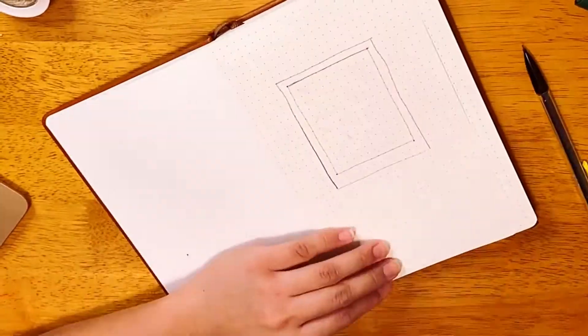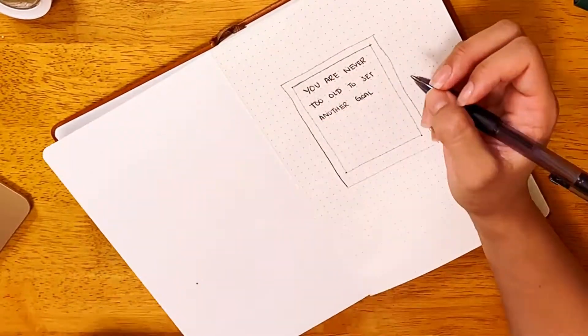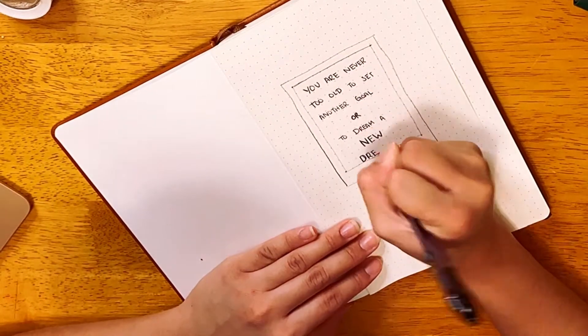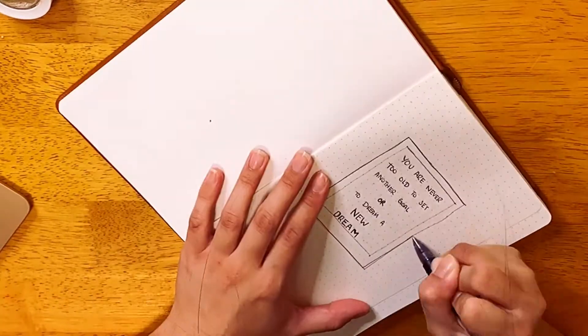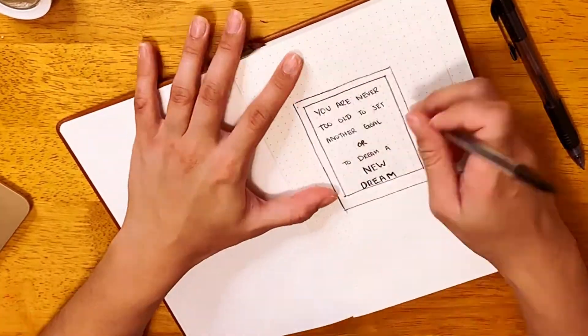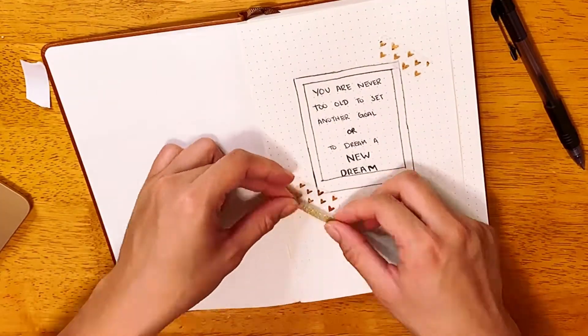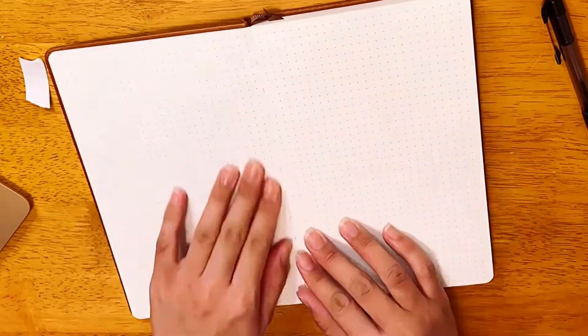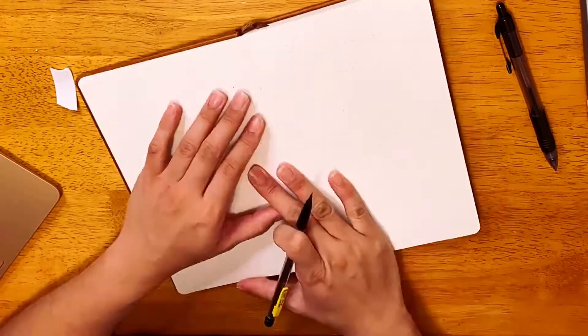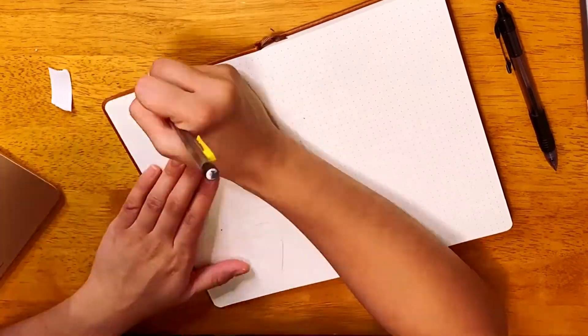As you can see, I am tracing everything with a pencil first because I just don't want to use a pen straight off the bat. I know I will make mistakes because this is my first time doing it. But by doing the pencil, I'm ensuring that I'm controlling the amount of mistakes that I make.